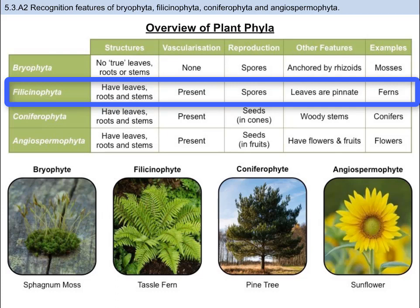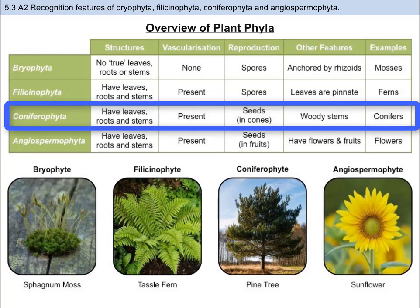Second, we have the Filiciniophyta, or ferns. In contrast to bryophytes, these have vascularization and have roots, stems, and leaves. The leaves are pinnate, which means they look like feathers, having leaflets on either side of an axis down the middle. Just like bryophytes, they reproduce by releasing spores on the undersides of their leaves.